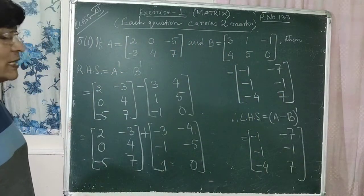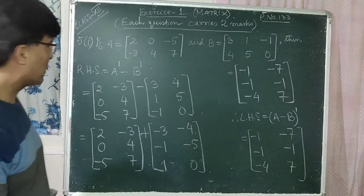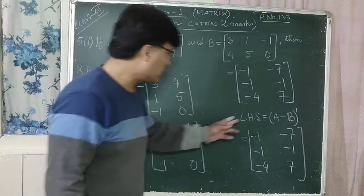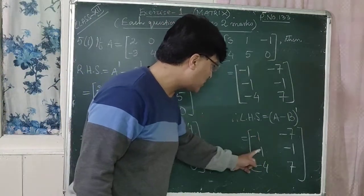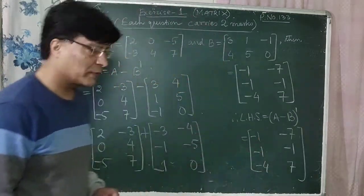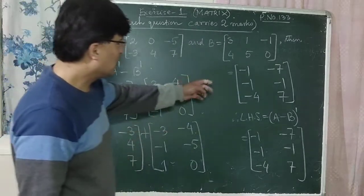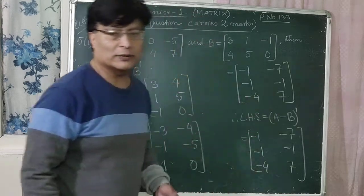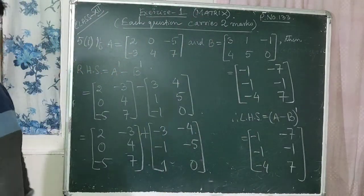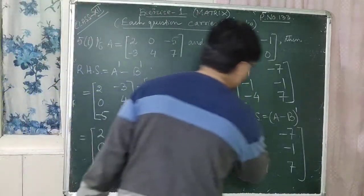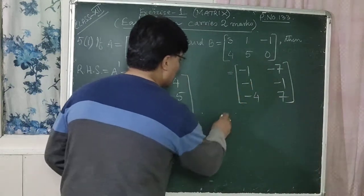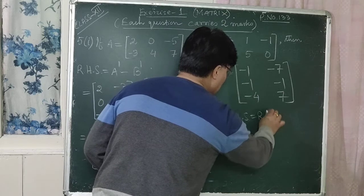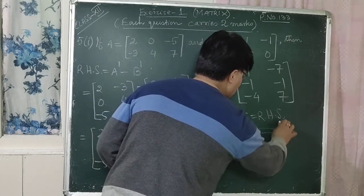LHS is [-1,-7; -1,-1; -4,7] and RHS is also [-1,-7; -1,-1; -4,7]. These two are equal, so LHS is equal to RHS. Therefore it is proved.